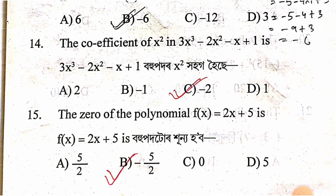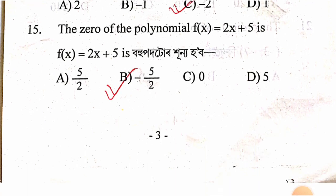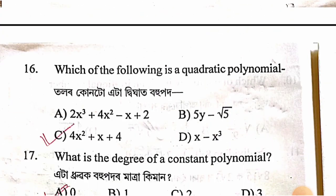A zero of the polynomial f(x) = x + 5: setting x + 5 = 0 gives x = −5. The answer is x = −5, option B.